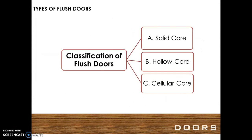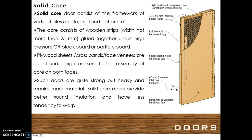The different types of flush doors are solid core, hollow core, and cellular core. Solid core flush door: the solid core door consists of a framework of vertical styles, top rail, and bottom rail. The core consists of wooden strips whose width should not be more than 25 mm, glued together under high pressure, or block board or particle board. Plywood sheets, cross bands, and face veneers are glued under high pressure to the assembly of core on both faces. Such doors are quite strong but heavy and require more material.